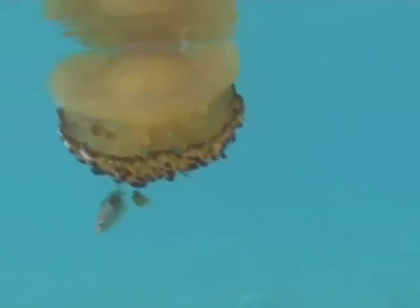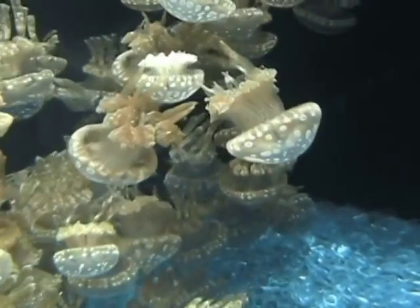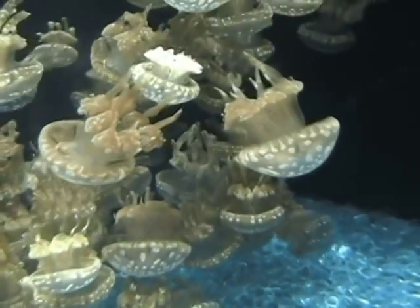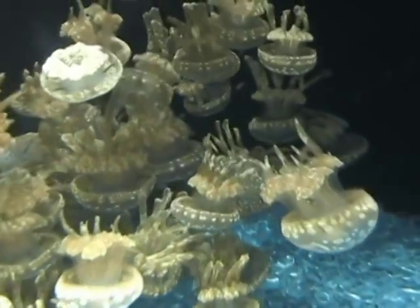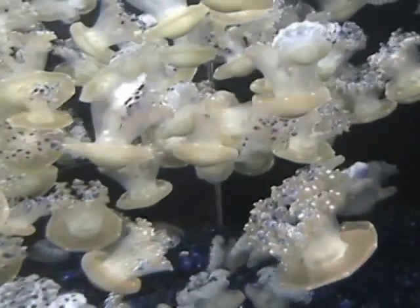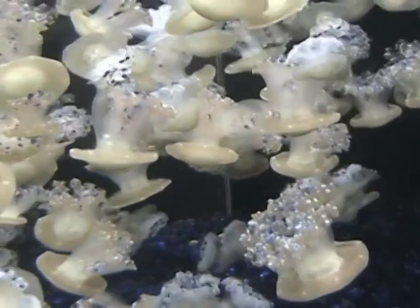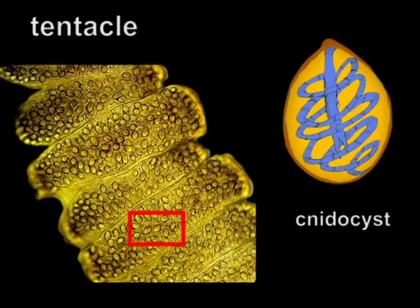The word Cnidarians originates from Greek and means nettle. This name refers to their ability to inflict painful stings by means of a stinging organelle called cnidocysts, contained in the epidermis. This picture shows numerous cnidocysts on the surface of a jellyfish tentacle.